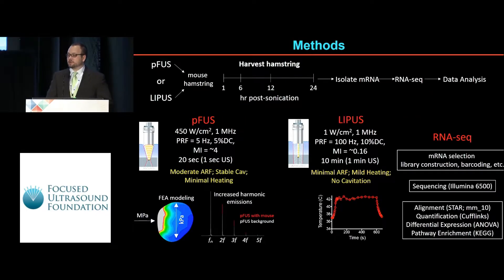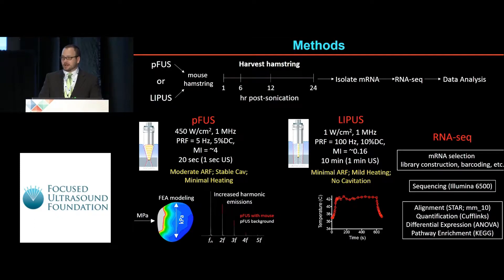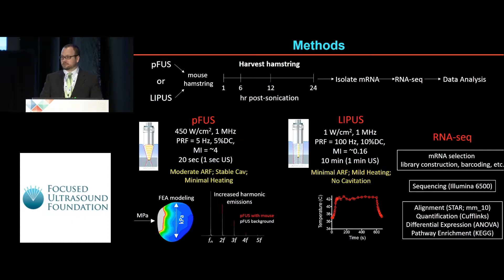Just a little background on the experiment. The setup is fairly simple. We give either non-ablative pulse-focused ultrasound without micro-bubbles or LIPO to murine hamstrings, then we harvest the hamstrings at various time points and perform RNA-seq.